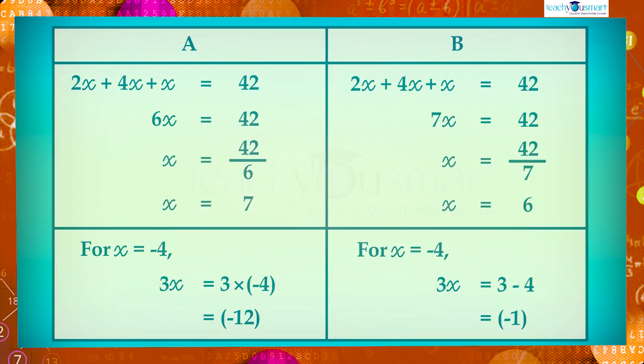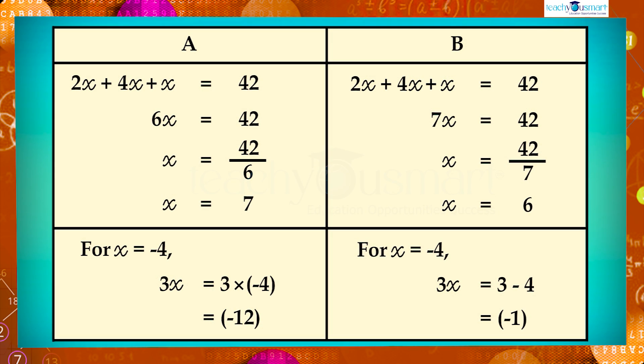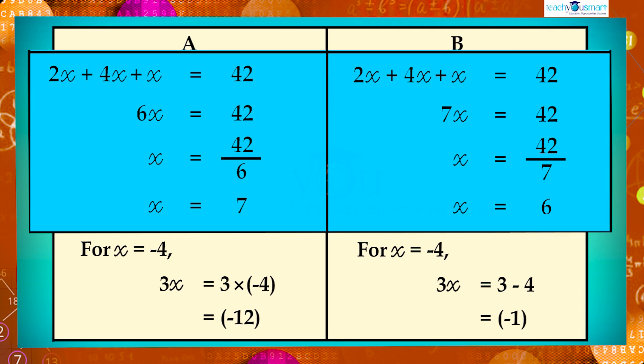Now let's go through some examples. You can see here a table shows some calculations of algebraic expressions. Identify which of the following calculations are correct. We will take the given calculations one by one. In 2x plus 4x plus x equals 42, can you say which one is correct, A or B?